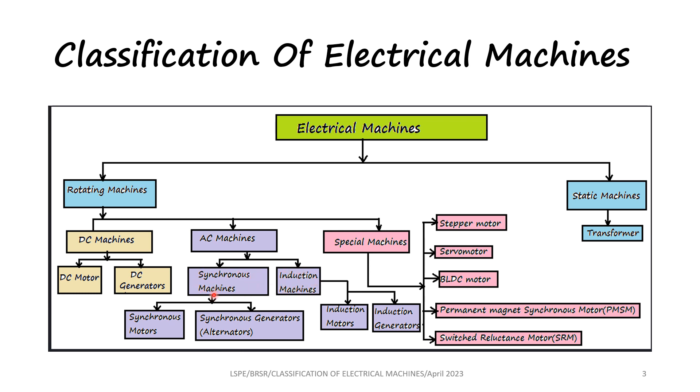Synchronous machines can be either synchronous motors or synchronous generators. The synchronous generators are also called alternators, which are mainly used to produce electrical energy for the consumers.